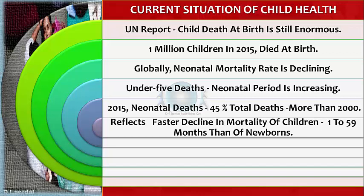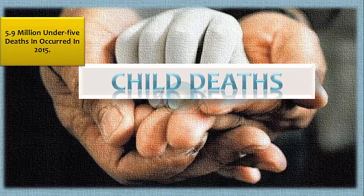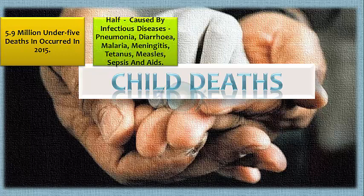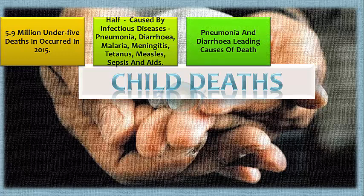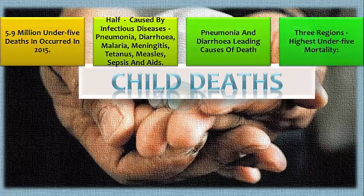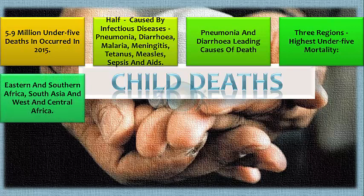As many as 6 million under-five deaths occurred in 2015, and almost half were caused by infectious diseases and conditions such as pneumonia, diarrhea, malaria, meningitis, tetanus, measles, sepsis, and AIDS. Pneumonia and diarrhea remain leading causes of death in the three regions with the highest under-five mortality: eastern and southern Africa, South Asia, and western and central Africa.